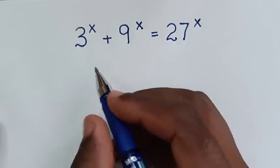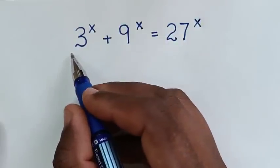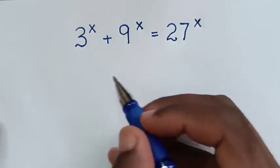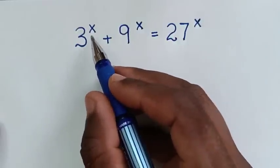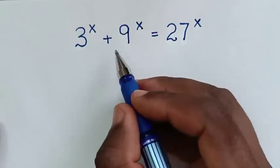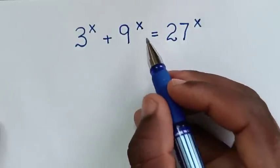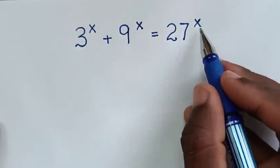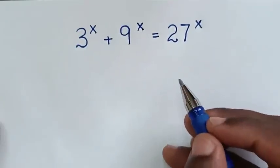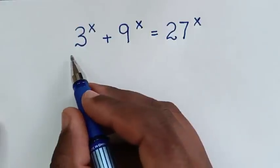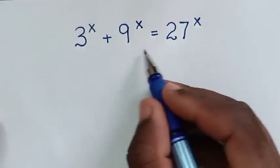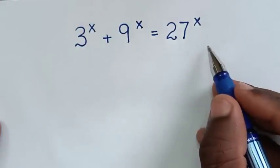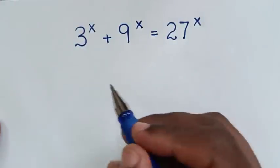Welcome. We are going to solve this math problem: 3^x plus 9^x is equal to 27^x. We need to find the value of x from this equation.